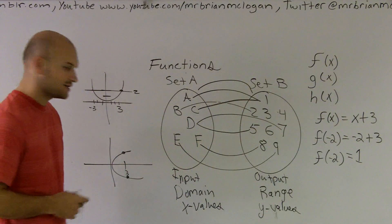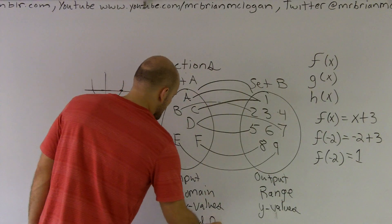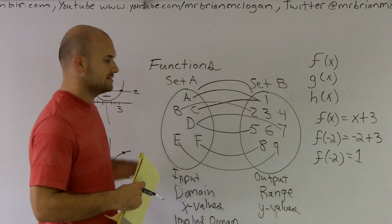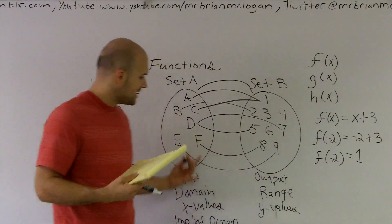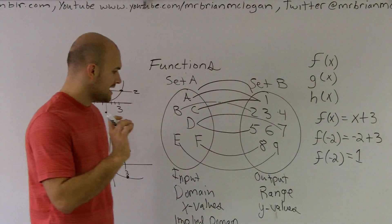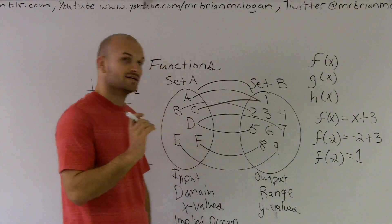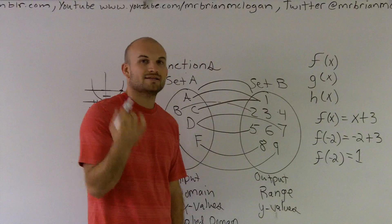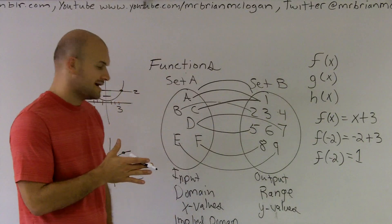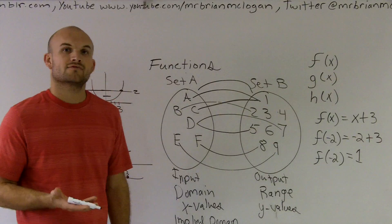The last thing I want to go over is what we call an implied domain. An implied domain is still all the x values that make your function true. However, there are two times we won't be able to have a domain number. One is when you have a rational function with zero on the bottom, because we cannot divide by zero. The other is when you're taking the square root of a negative number, which gives us an imaginary number.